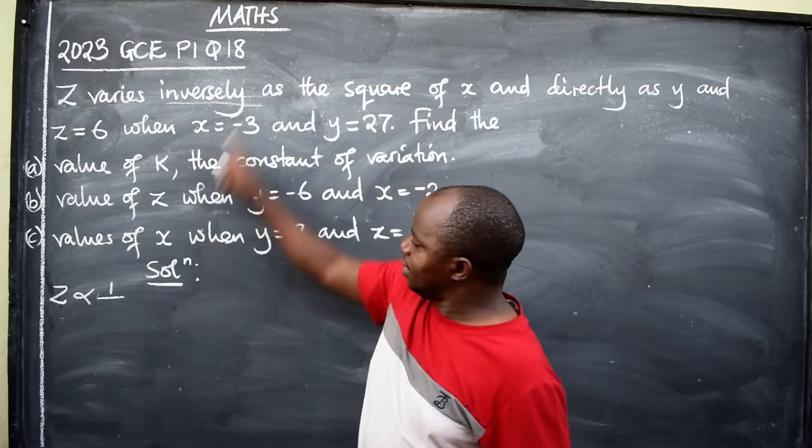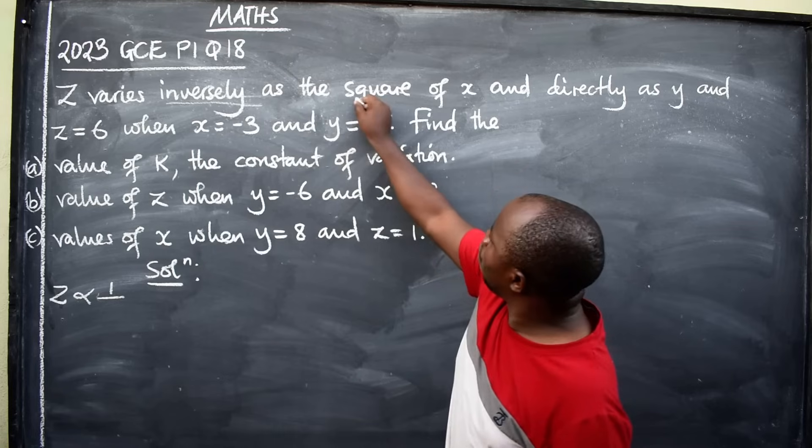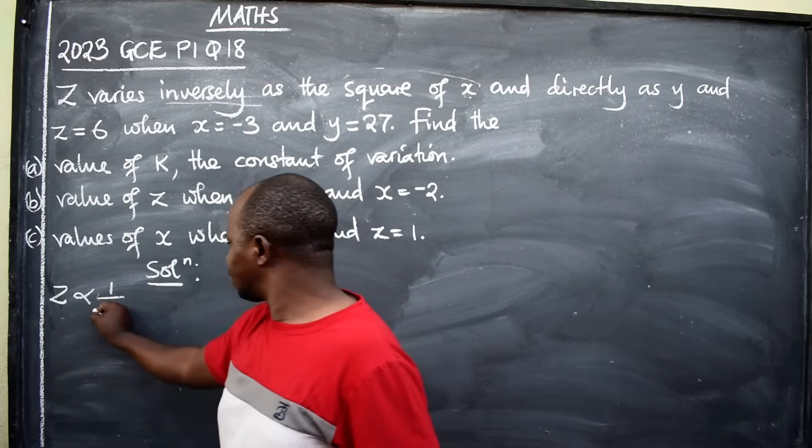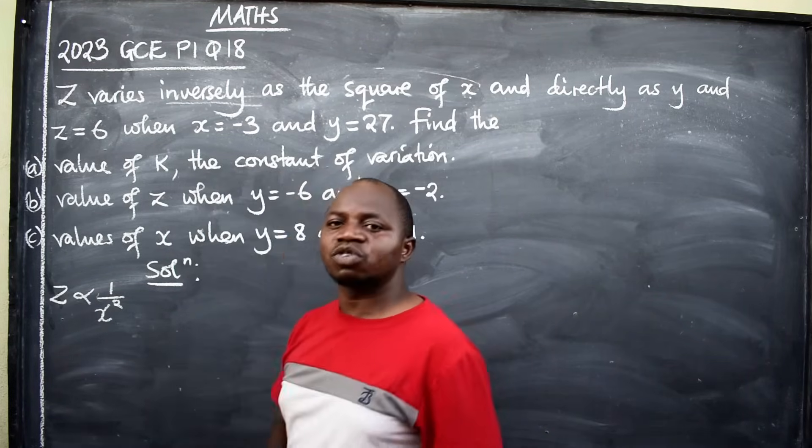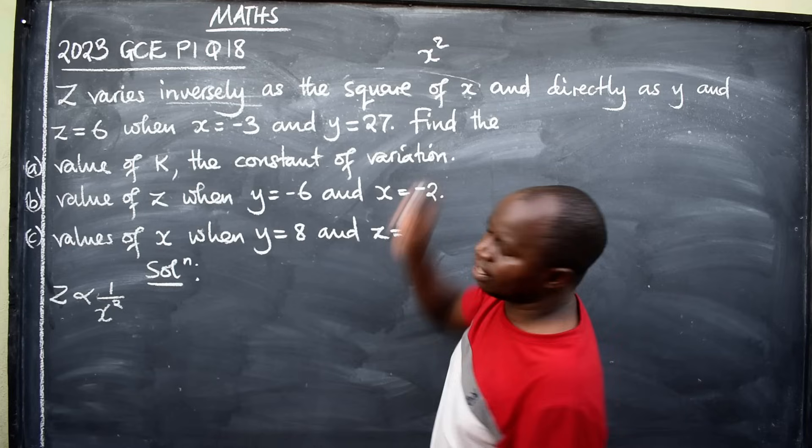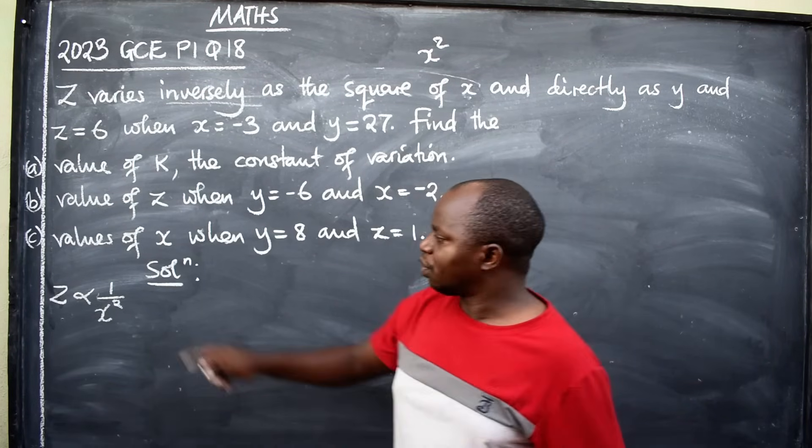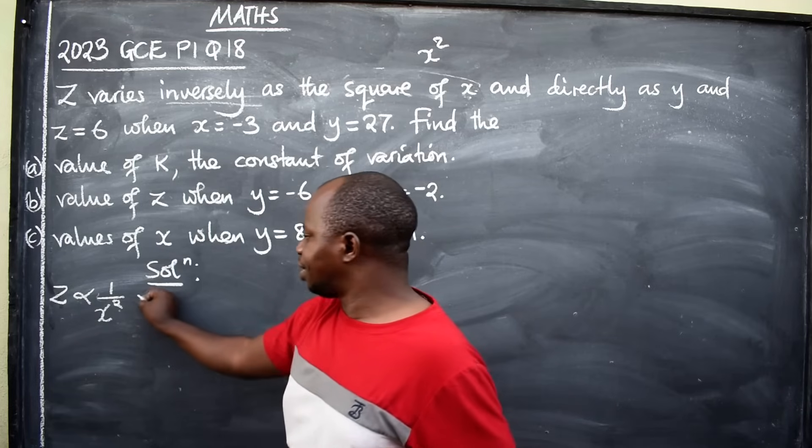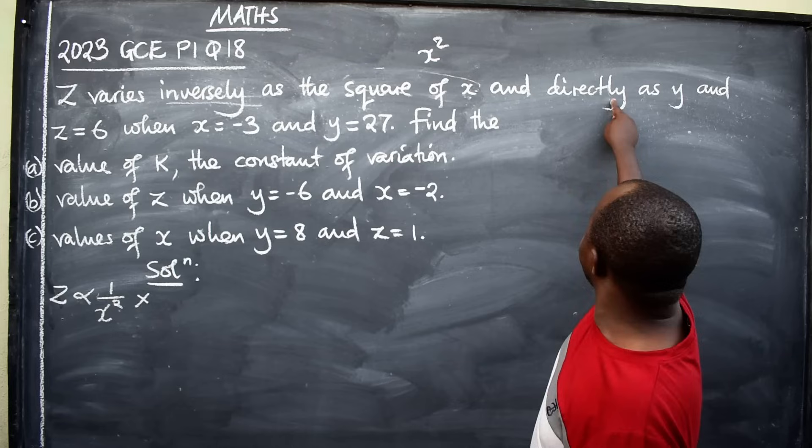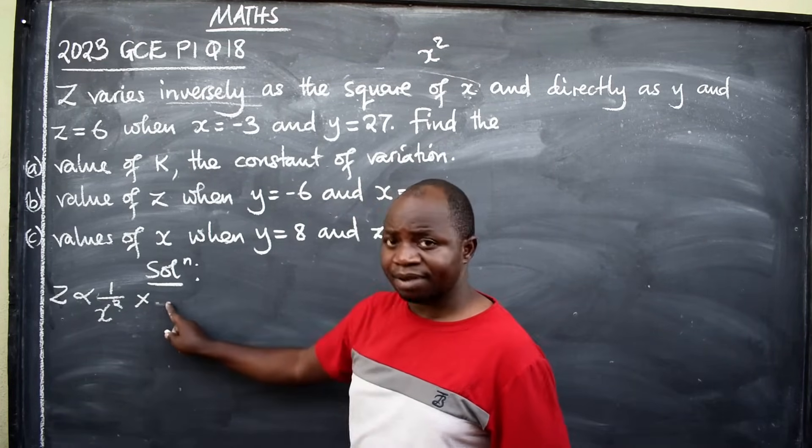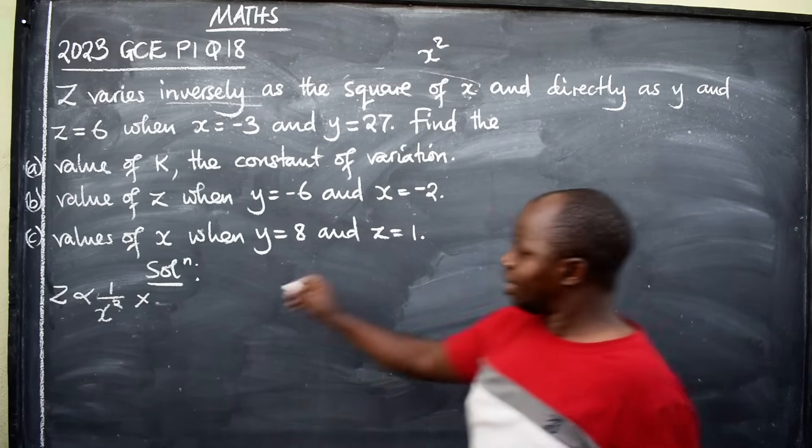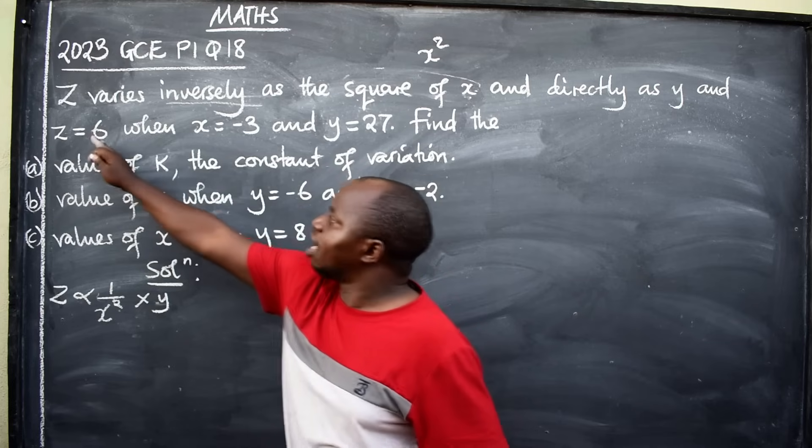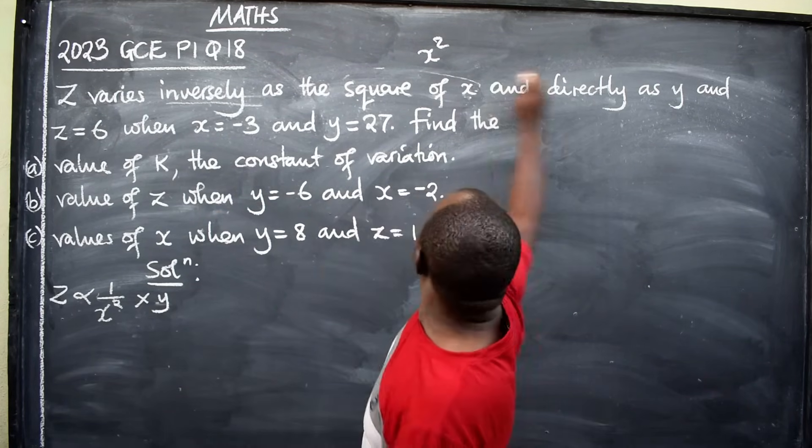Z varies inversely as what? But the square of x. That is square of x. Square of x means x squared. Z varies inversely as square of x. We've reached here. And directly. So directly, there is nothing like one over. We are going to write here, direct as what? Y. As y. Direct as y. And z now, figure starts. This is where the translation will end.